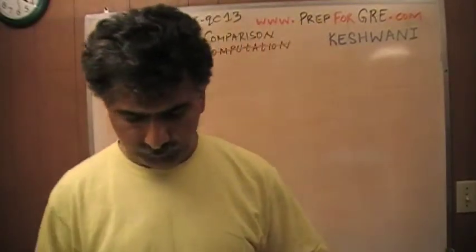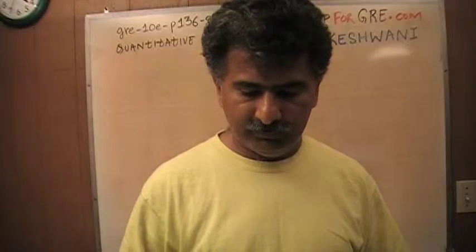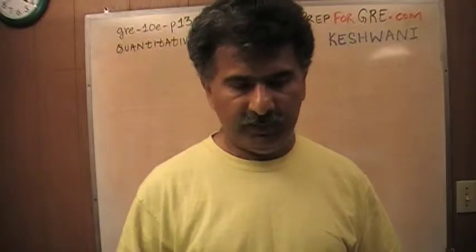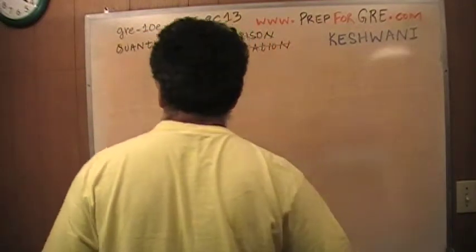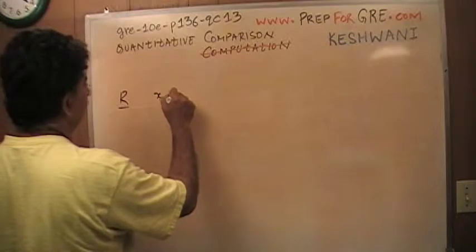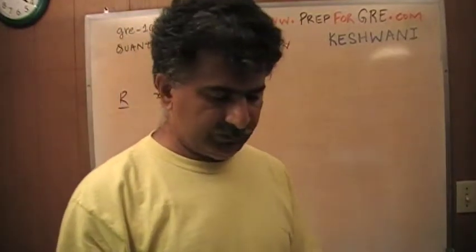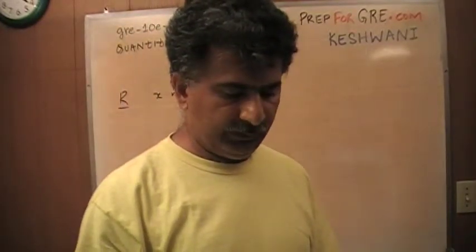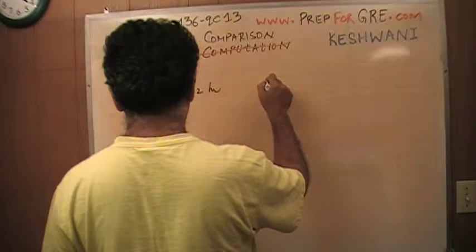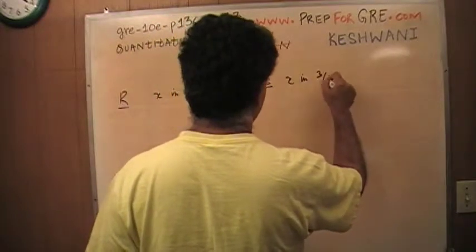Number 13 says: working at constant rates, machine R completely presses X records in half an hour. So machine R does X records in half an hour. Then we have machine S that completely presses X records in three-quarters of an hour.